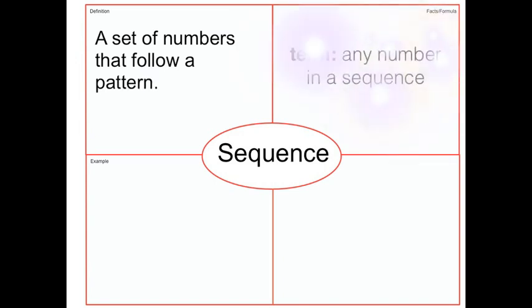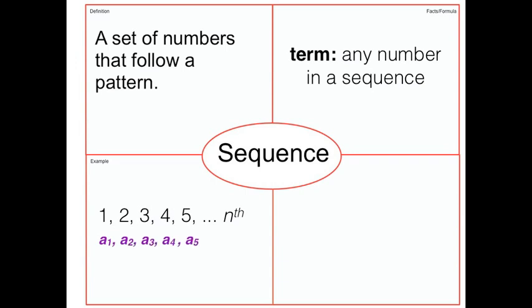Now, in that pattern you have terms. And any number in a sequence is a term. So for these numbers, number one will be the first term, as indicated by A1. Two, the second term, and so on. All the way to the nth term.